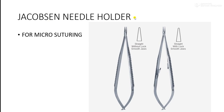Finally, the Jacobson needle holder is a precise instrument used for micro-suturing when suturing is done near the spinal cord, near the brain, or near the meninges. These are all the instruments mainly used in neurosurgical procedures. Thank you for listening.